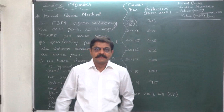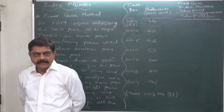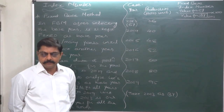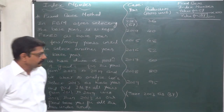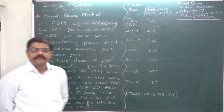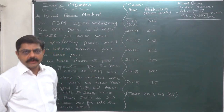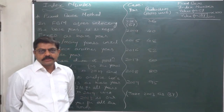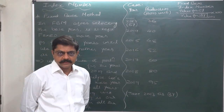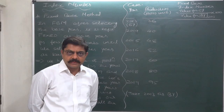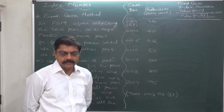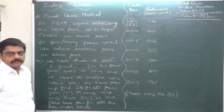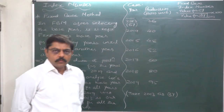Hello and welcome. In our last lecture we discussed about index numbers, current year, and base year. At the end of the lecture, the concluding part was that there are two methods of determination of base year, and they are called the fixed base method and the chain base method. Now let's discuss about the fixed base method.